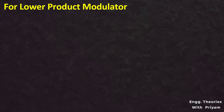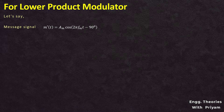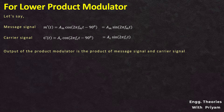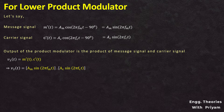Next, for the lower product modulator in the quadrature path, the message signal is 90-degree phase shifted: m'(t) = AM·cos(2π·fM·t − 90°) = AM·sin(2π·fM·t), which is the Hilbert transform of m(t). The carrier signal from the local oscillator is also passed through a 90-degree phase shifter: c'(t) = AC·cos(2π·fC·t − 90°) = AC·sin(2π·fC·t). The output V2(t) = m'(t)·c'(t) = AM·sin(2π·fM·t) × AC·sin(2π·fC·t).